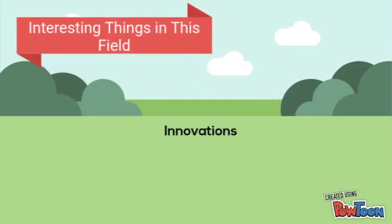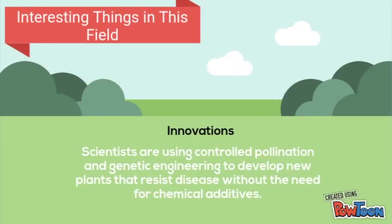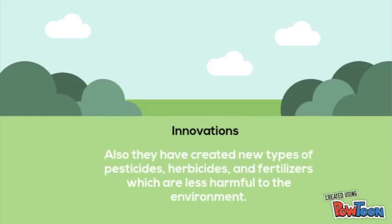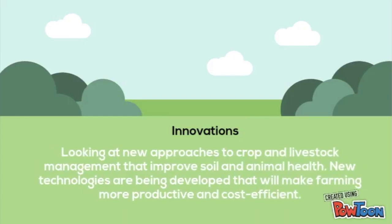Some of the interesting things in this field include innovation. Scientists are using controlled pollination and genetic engineering to develop new plants that resist disease without the need for chemical additives. They are also researching ways to create plants that can grow in soil that lacks nutrients and requires less water to grow. They have created new types of pesticides, herbicides, and fertilizers which are less harmful to the environment. They are also looking at new approaches to crop and livestock management that improve soil and animal health, and new technologies are being developed that will make farming more productive and cost efficient.